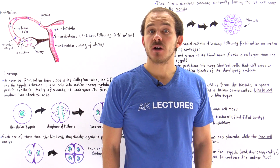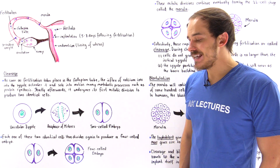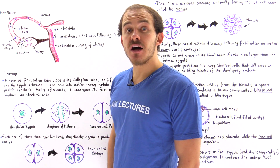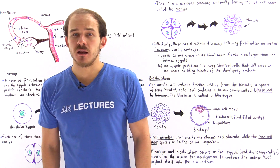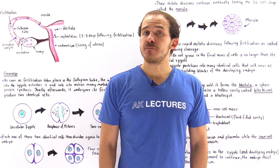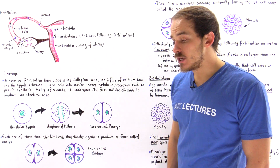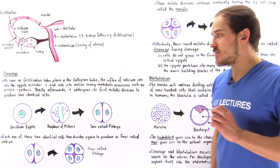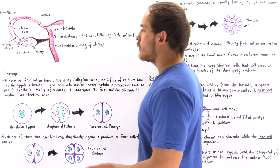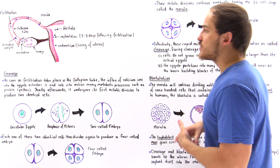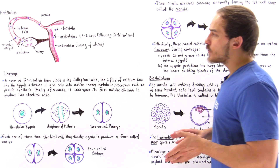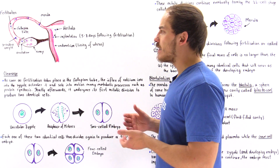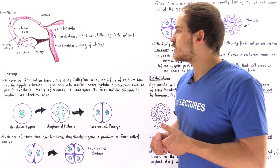Embryological development is a series of complex and intricate processes that ultimately allow the zygote, following fertilization, to develop into the billions and billions of cells that make up the adult individual. In this lecture we're going to discuss the first two processes of embryological development — cleavage and blastulation. But first, let's begin by taking a look at the following diagram that describes the structure of the female reproductive system.